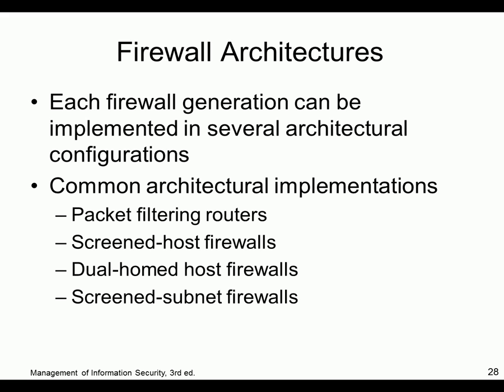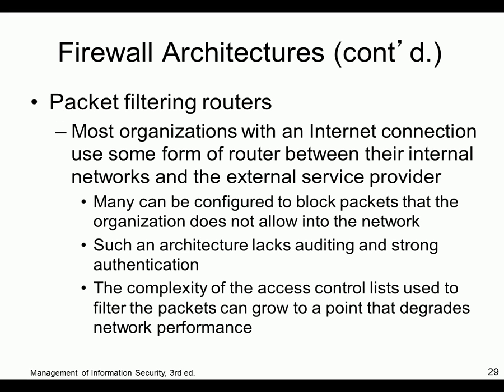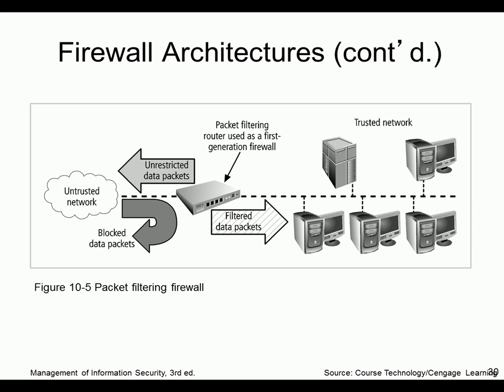Looking at implementations: dual-homed has a system with multiple interfaces — inside and outside. You could have packet filtering routers, which is what you have here — a router with an ACL that filters packets. You can configure to block packets that aren't allowed. In our lab upstairs at Rose State with the virtual lab, we manage our own connection — they gave us unfiltered traffic and told us we needed to take care of ourselves, so we filter ourselves.